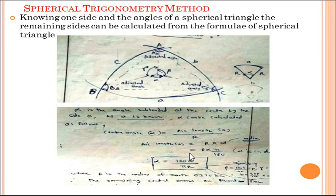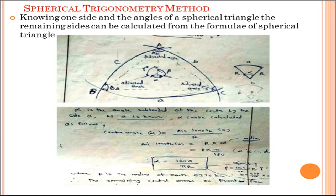Therefore, α = 180A / (πR), where α is the subtended angle between the arcs and R is the radius of the earth, 6,370 kilometers. The remaining central angles can be calculated the same way: β = 180B / (πR), and similarly γ = 180C / (πR).